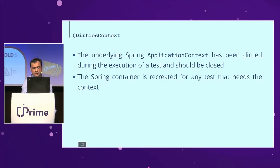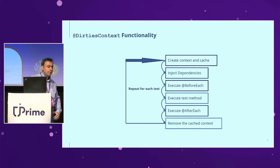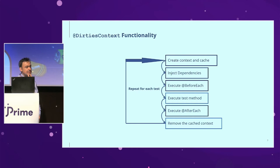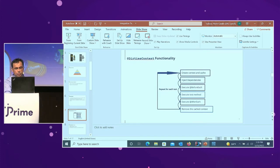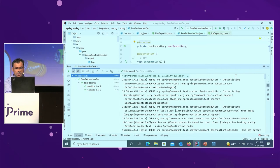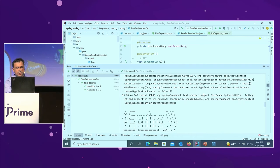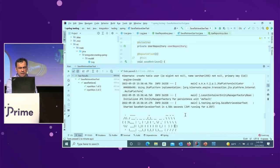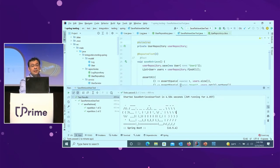How does DirtiestContext work? We have a loop: we create the context and cache, inject dependencies, execute some lifecycle methods, execute the test method itself, and then remove the cached context. This comes at a price, because when you reinitialize the context it will take some time. When I insert this DirtiestContext execution, I can see the Spring Boot banner appearing twice — once for each test execution — meaning the context was reinitialized. So this comes at a cost.